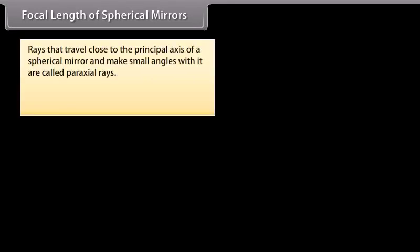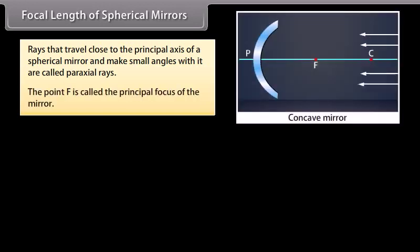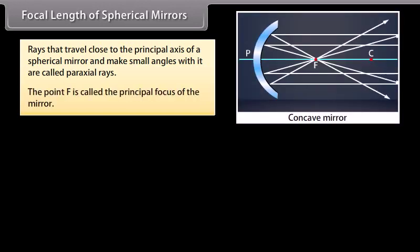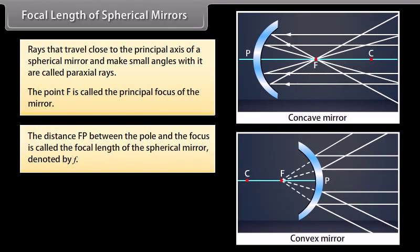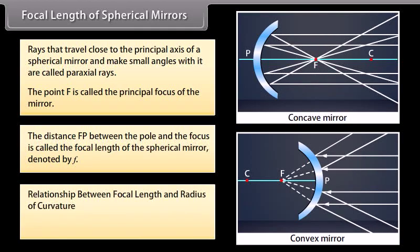Rays that travel close to the principal axis of a spherical mirror and make small angles with it are called paraxial rays. The point F is called the principal focus of the mirror. The distance FP between the pole and the focus is called the focal length of the spherical mirror, denoted by F. The relationship between focal length and radius of curvature is: F = R/2.